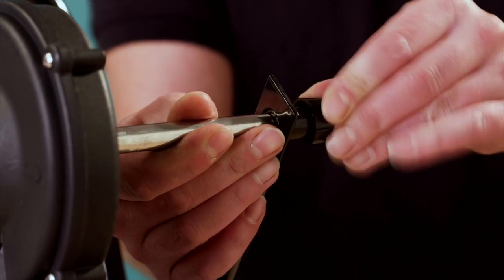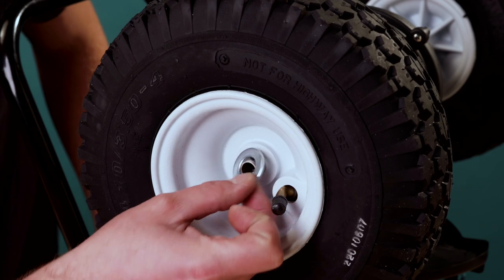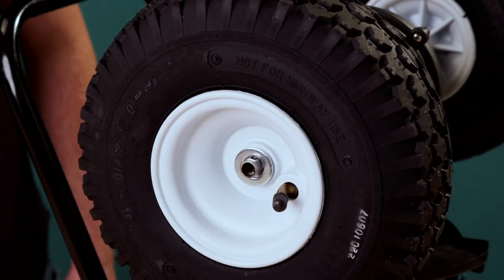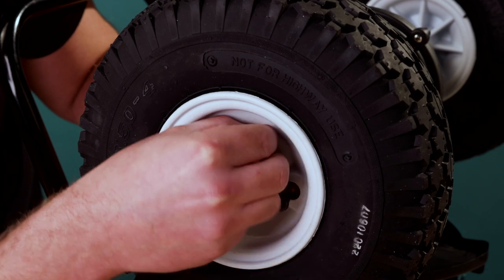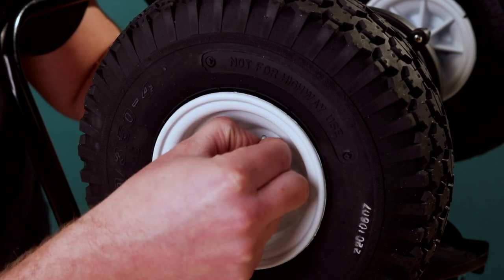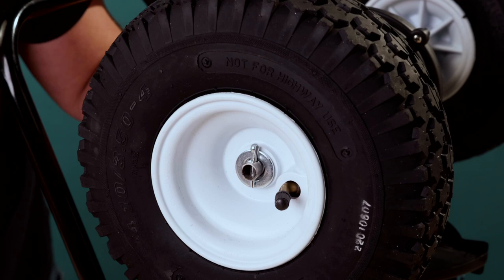Push the other axle bearing into position. Attach the other pneumatic wheel. Take the small cotter pin and the wheel washer. Place the wheel washer over the axle and slide the cotter pin into the hole to fix the second wheel.